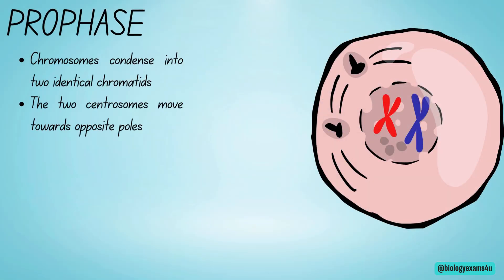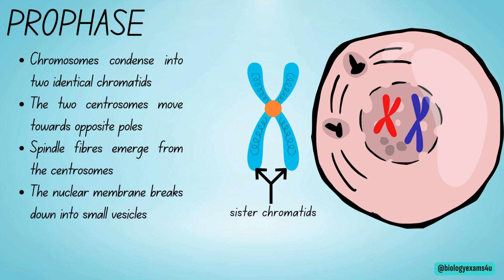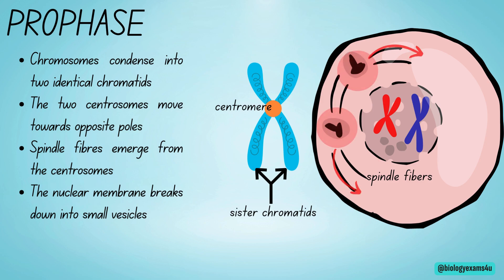In prophase, chromosomes condense and when stained are visible with two identical chromatids called sister chromatids, joined together at the centromere. The two centrosomes move towards the opposite poles, and spindle fibers made up of protein microtubules start to emerge from the centrosome. In animals, each centrosome consists of two centrioles. The nuclear membrane breaks down into small vesicles.